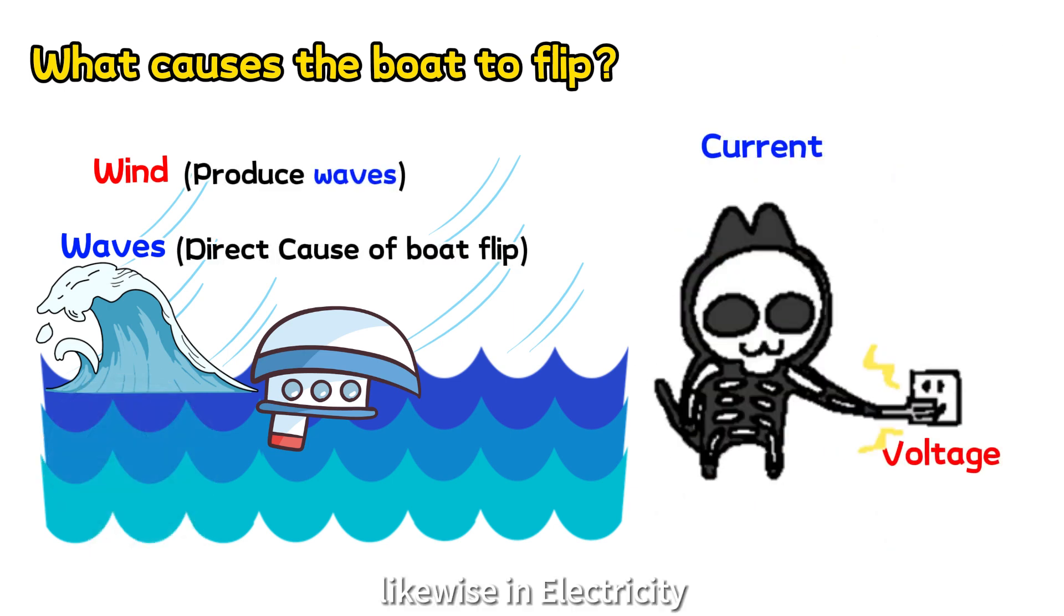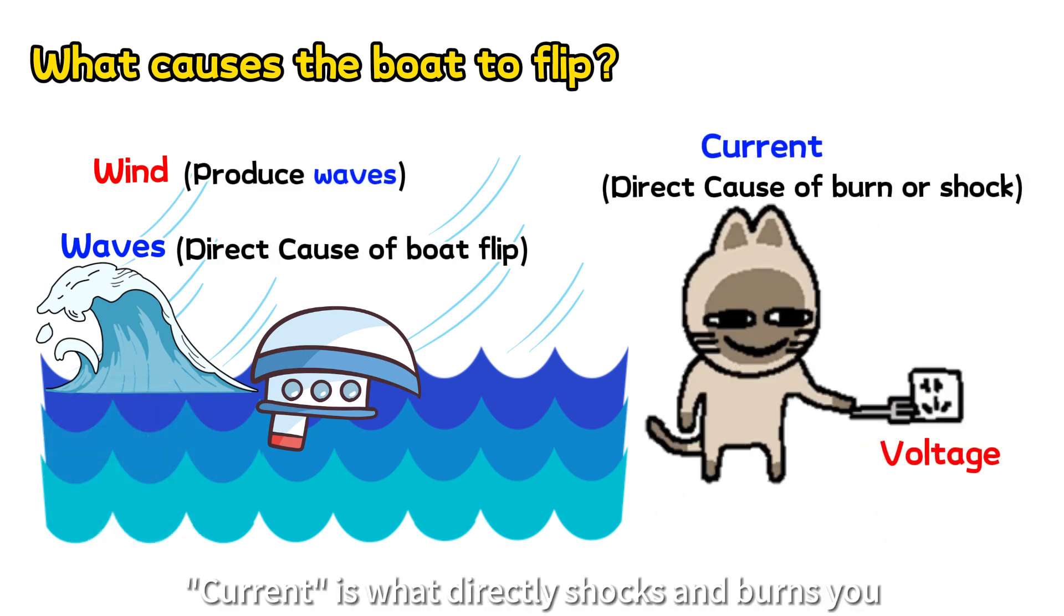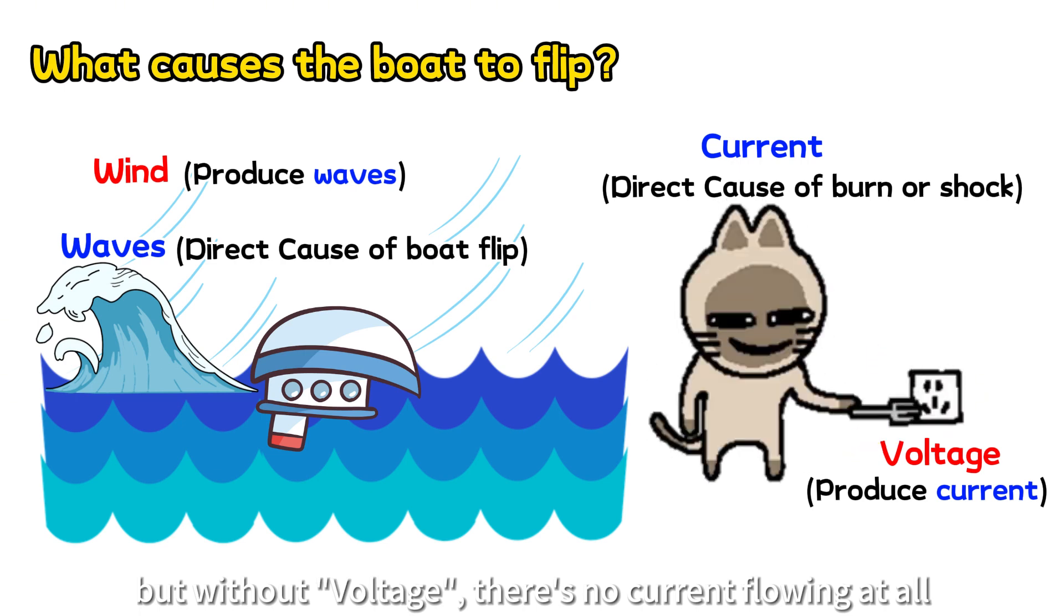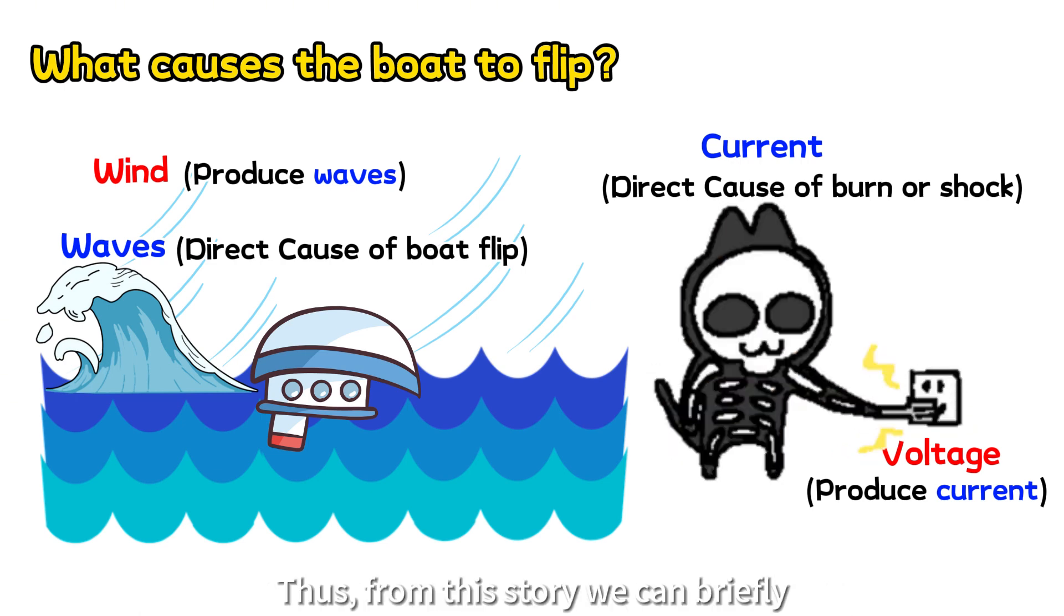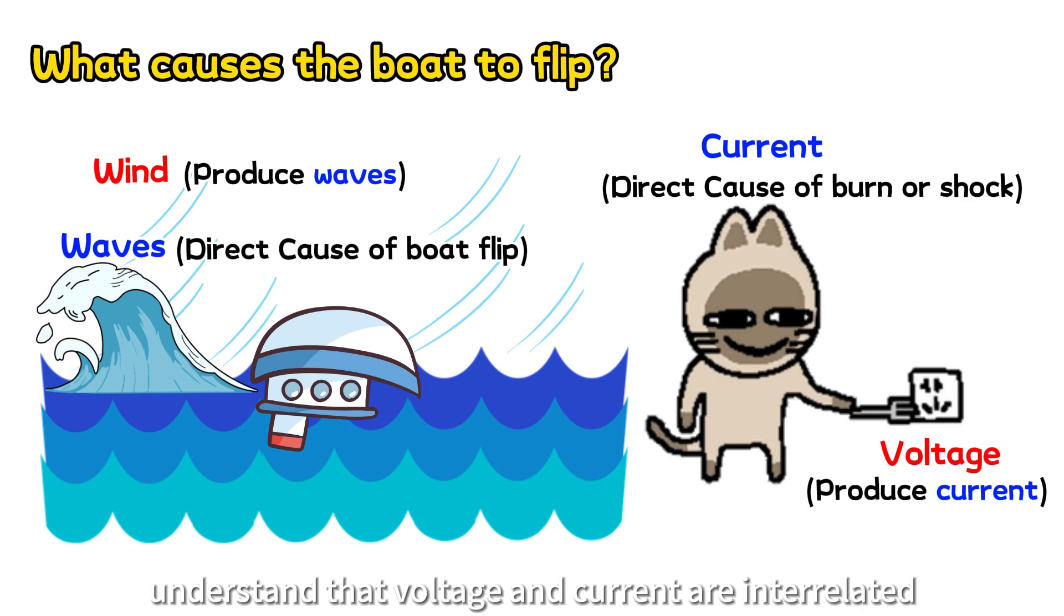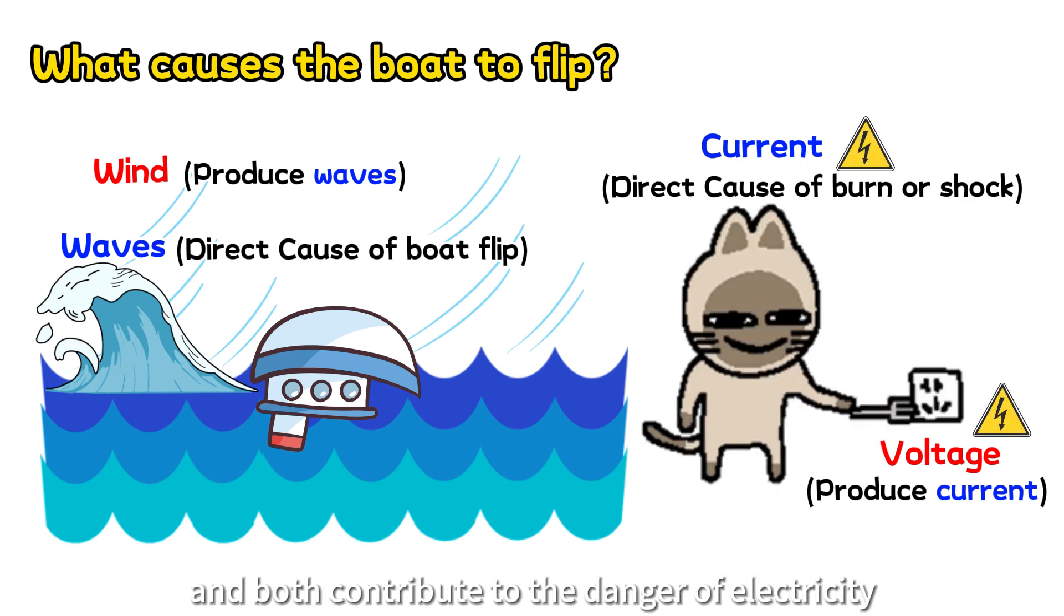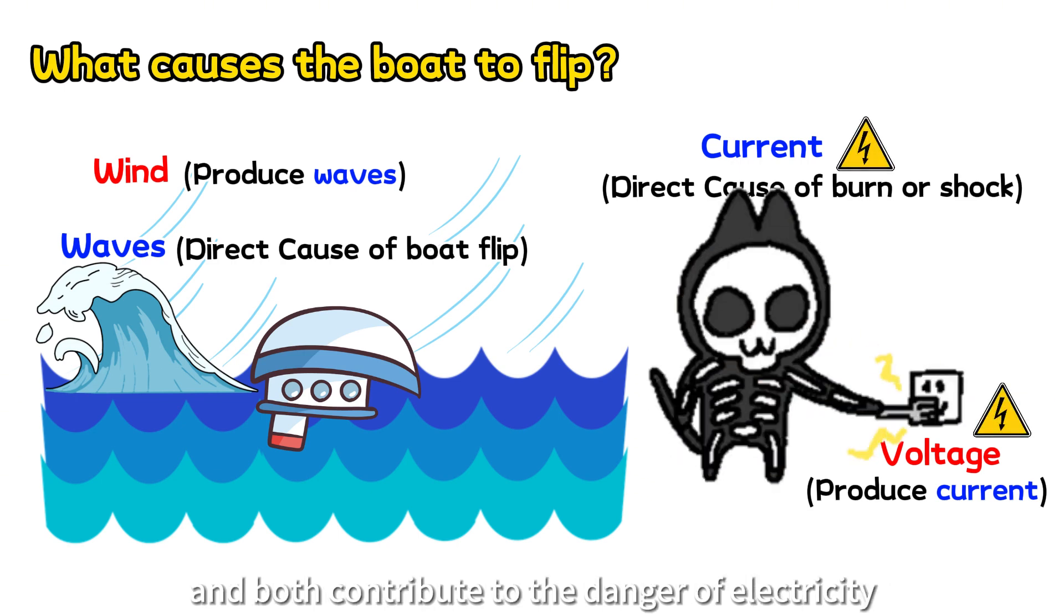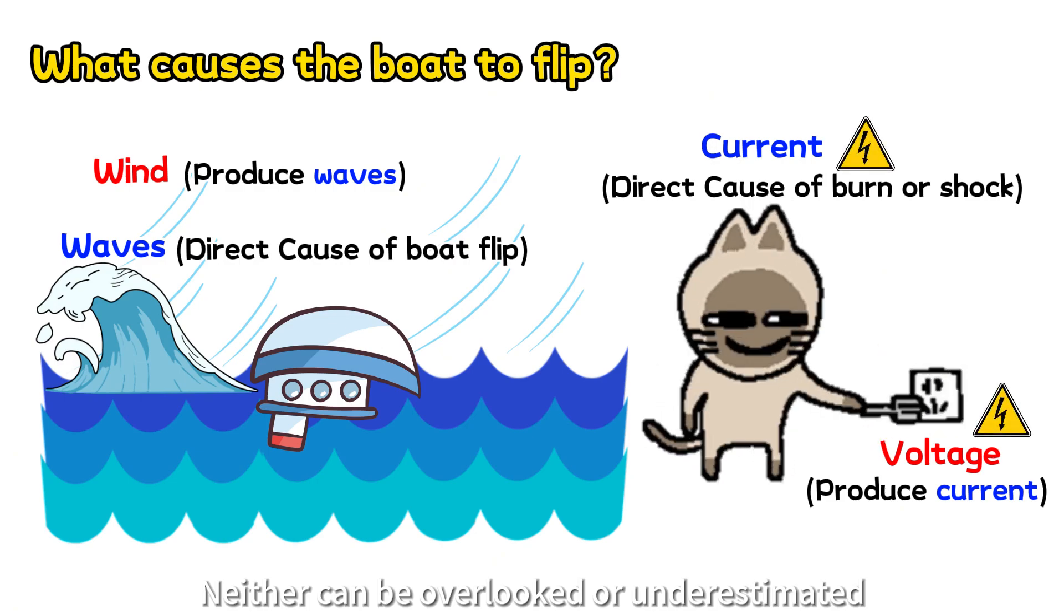Likewise, in electricity, current is what directly shocks and burns you. But without voltage, there's no current flowing at all. Thus, from this story, we can understand that voltage and current are interrelated and both contribute to the danger of electricity. Neither can be overlooked or underestimated.